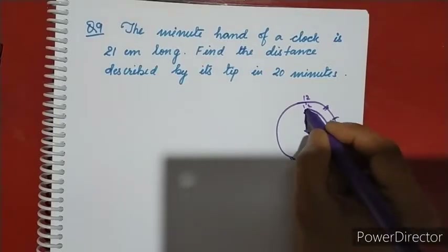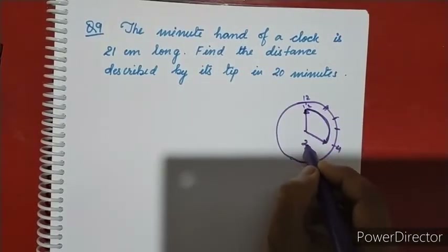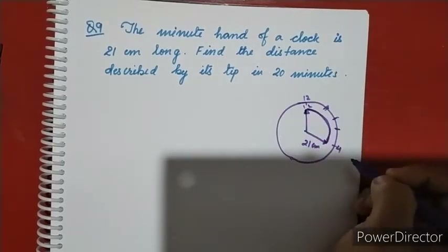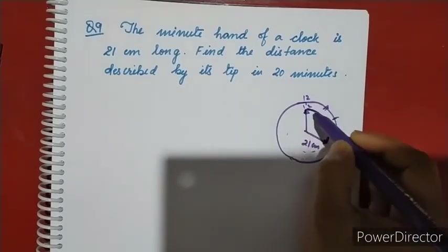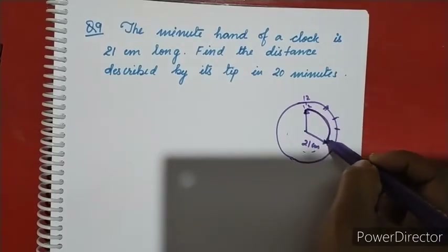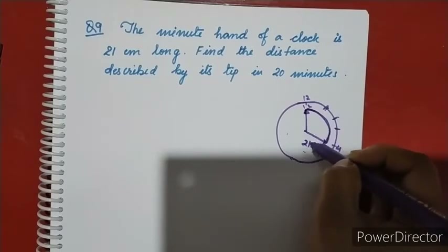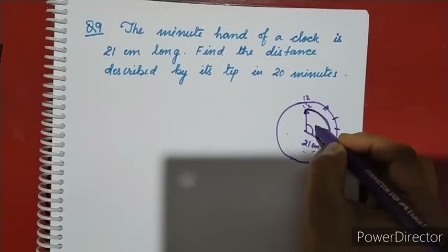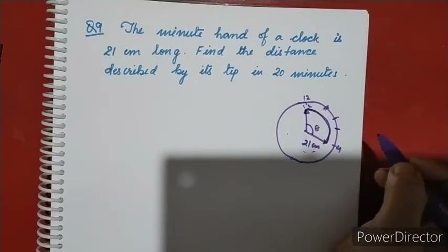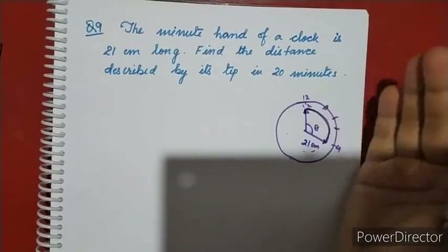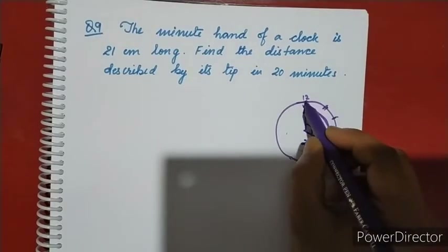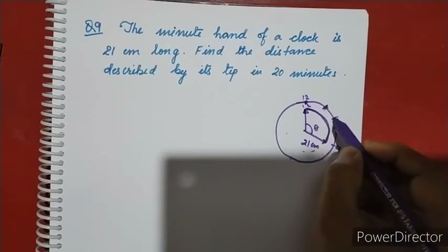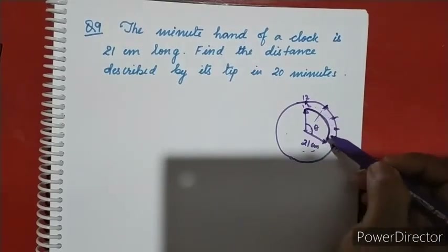The minute hand sweeps through an angle as it moves. The radius is 21 cm. We need to find the arc length — the distance between two positions of the tip.